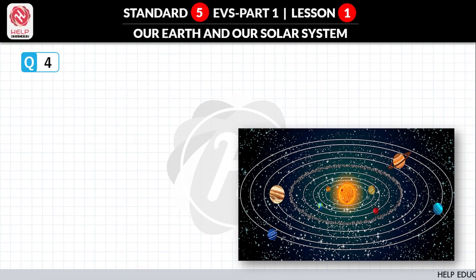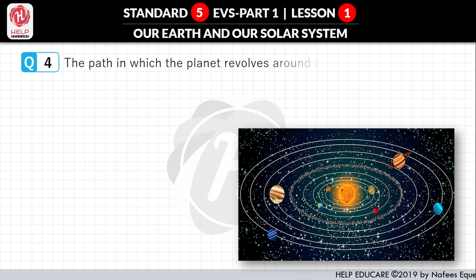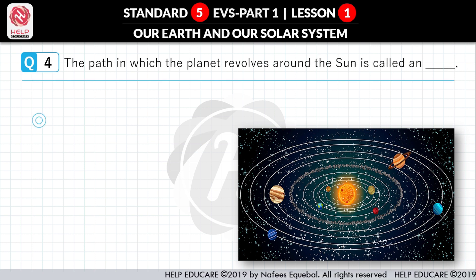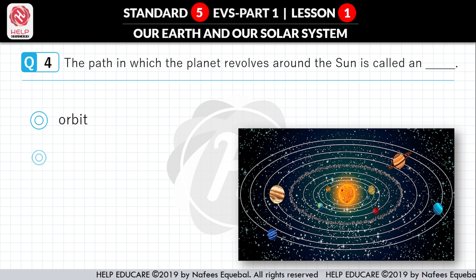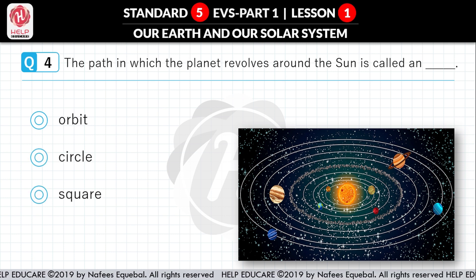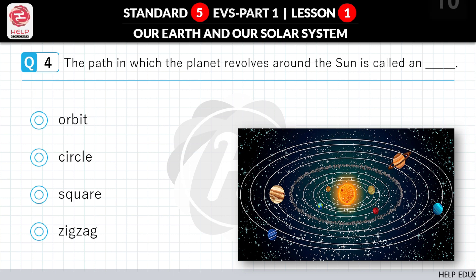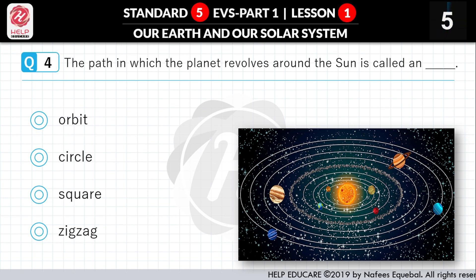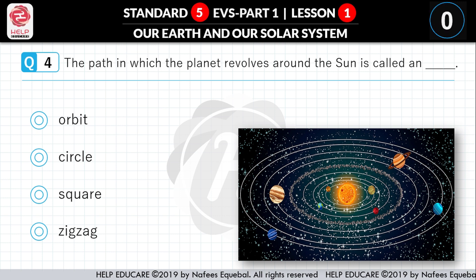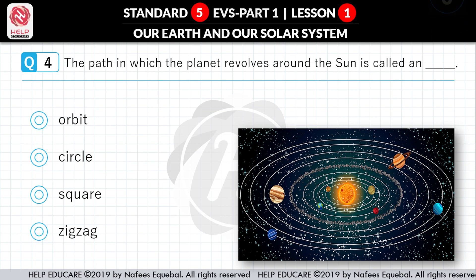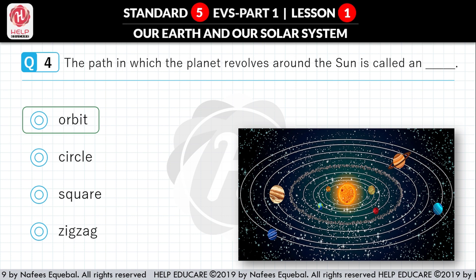Question No. 4: The path in which the planet revolves around the sun is called an dash. First option: orbit. Second option: circle. Third option: square. Fourth option: zig-zag. Correct answer is orbit.